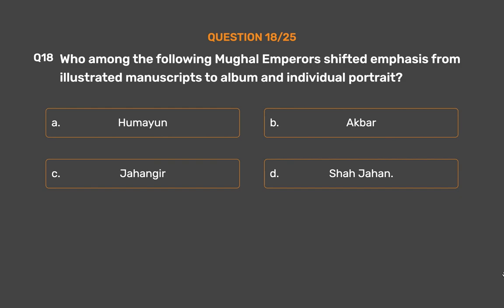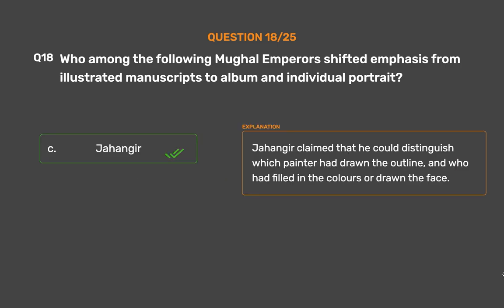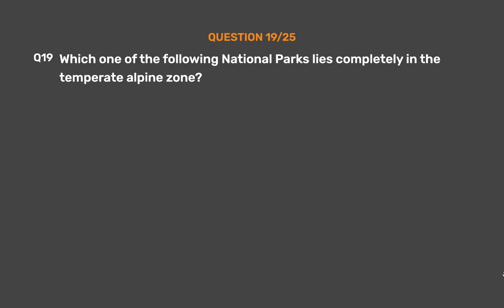The correct answer is Option C: Jahangir. Jahangir claimed that he could distinguish which painter had drawn the outline, and who had filled in the colors or drawn the face.